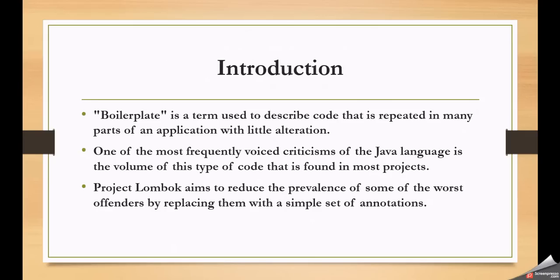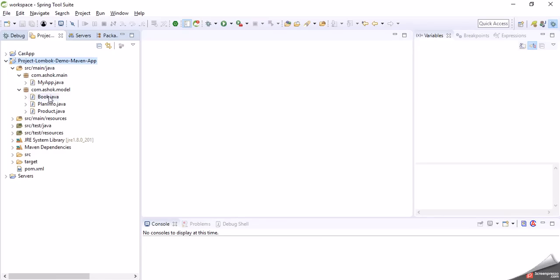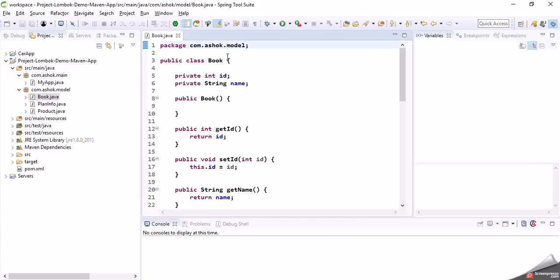In JDBC programs we write several lines of code to load a driver, get a connection, create a statement, process a result set, and close the statements and connections. The same lines of code we write in several JDBC programs with small changes in queries. That same code written in multiple classes can be called boilerplate code. Not only JDBC logic — if we look into our project, several model classes, generally called POJO classes, will be there to store and retrieve data.